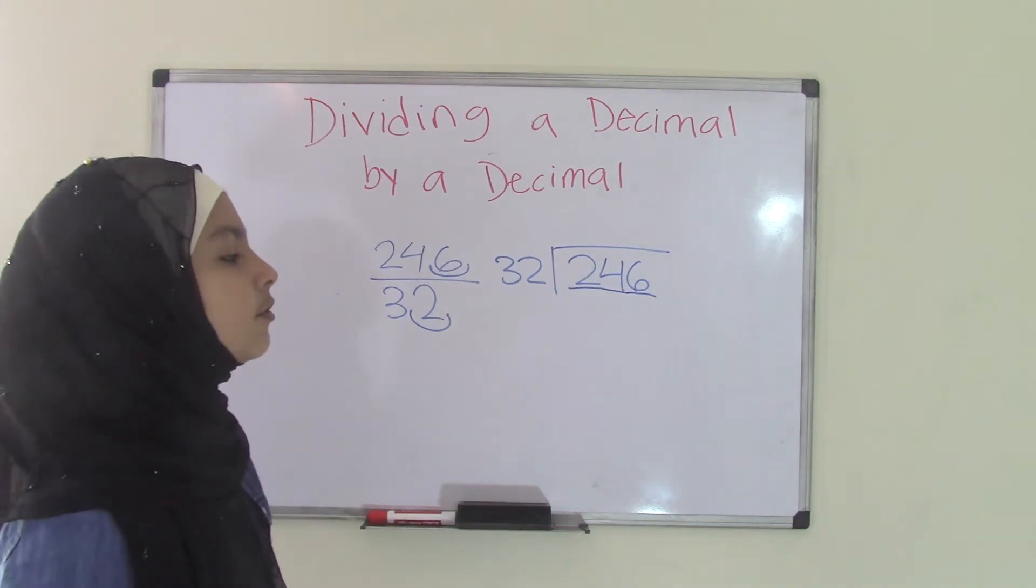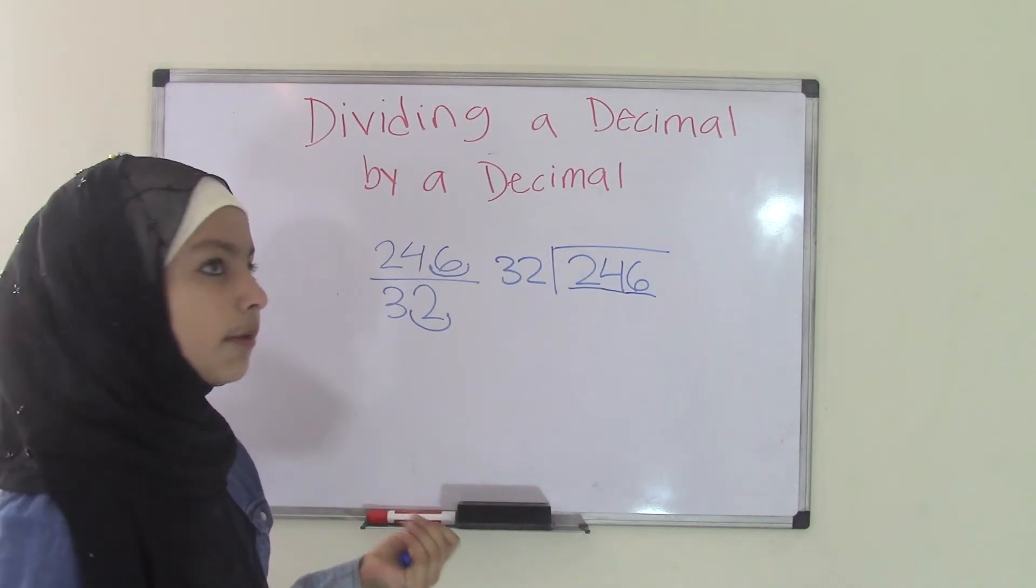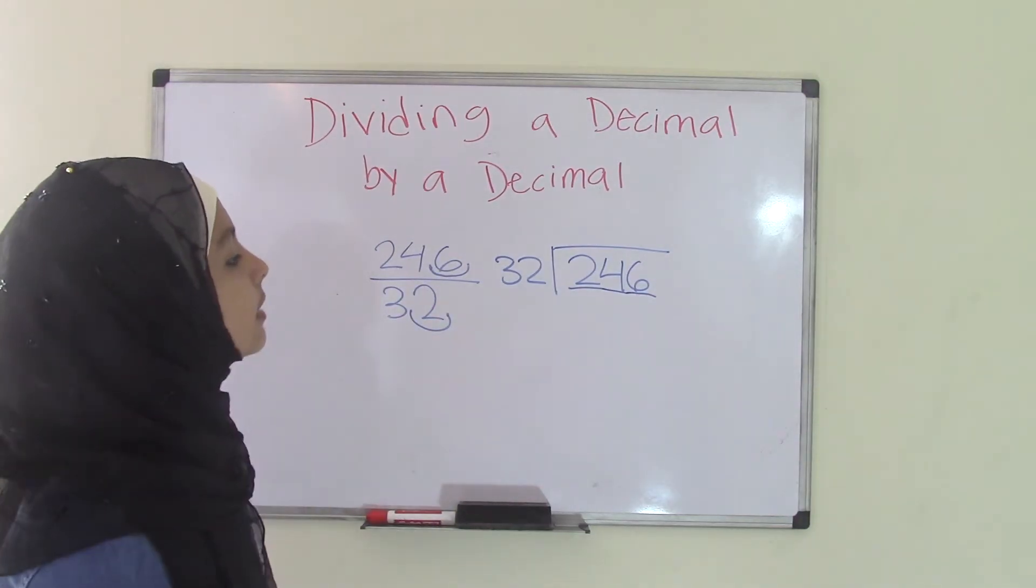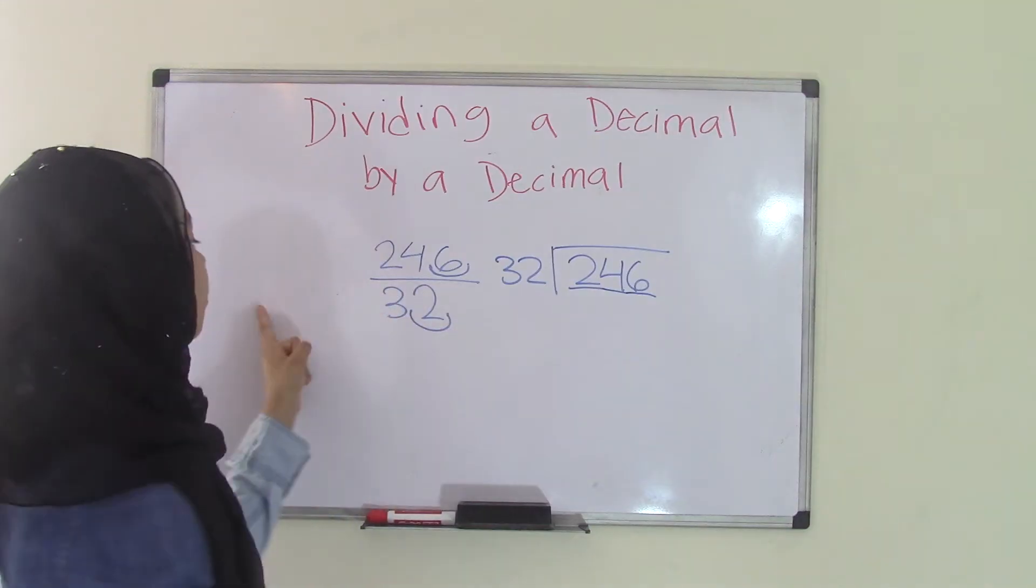So now it becomes 246 divided by 32. You can do that. So you're going to have to come up with a number that you can multiply by 32 to get 246. So what we can do is write the times table of 32 over here.